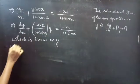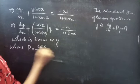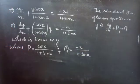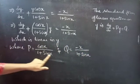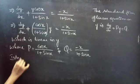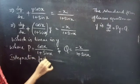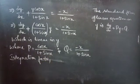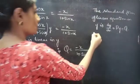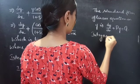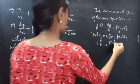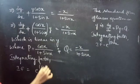Simply by comparing these two equations, we get P equals cos x over 1 plus sin x, and Q equals minus x over 1 plus sin x. So here P and Q are functions of x only — they do not involve any y. Now we need to find the integrating factor IF, which for a linear equation in y is given by e to the power of the integral of P dx.